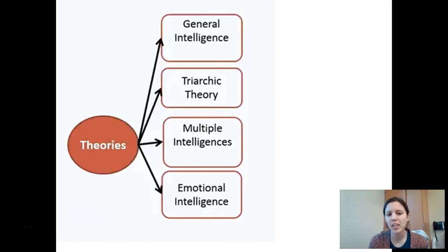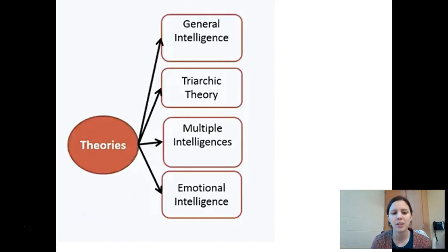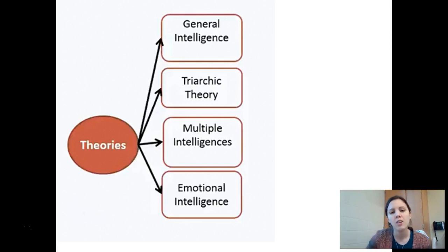Now that we've learned about G and the multiple intelligences theory of Gardner, we're going to finish up the last two theories today on intelligence: the triarchic theory and emotional intelligence.